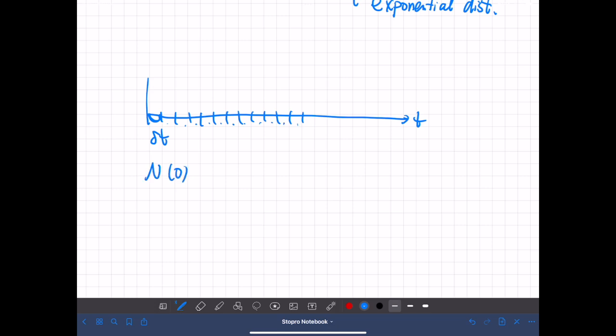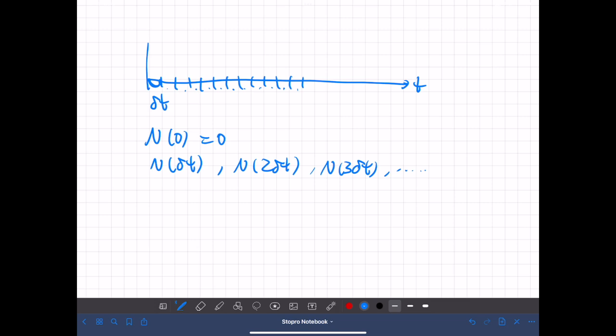So we only consider n of 0, which is by definition 0, and n of delta t, n of 2 delta t, n of 3 delta t, and so on. So we only consider the times that are multiples of delta t. So we have to specify this value of delta t first.